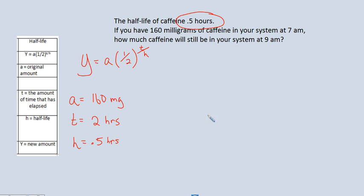All right, so now we just take that and plug it into our formula. So Y is equal to 160, our rate which is one-half, our time which is two, and our half-life which is 0.5.